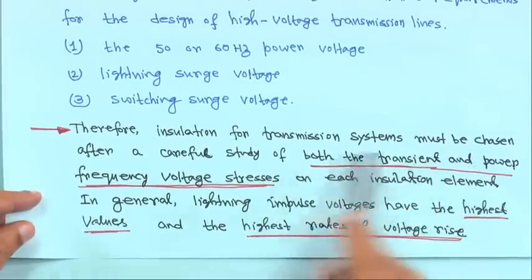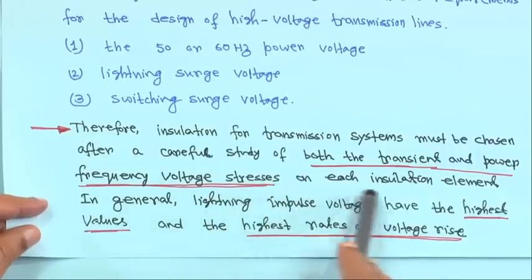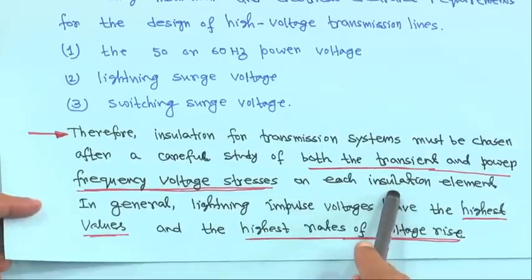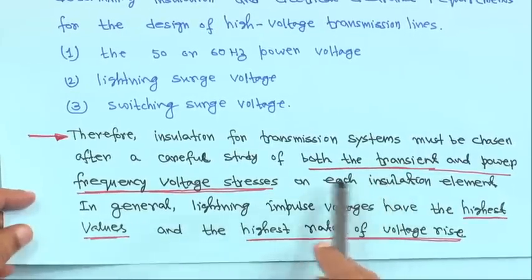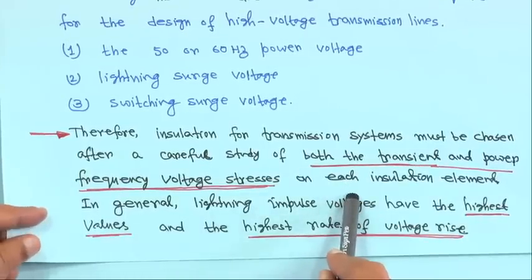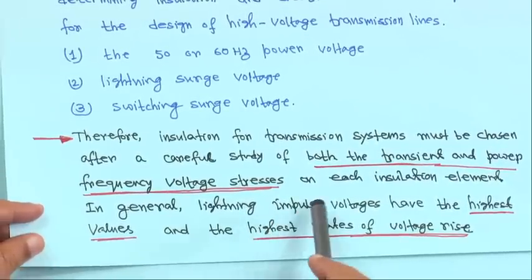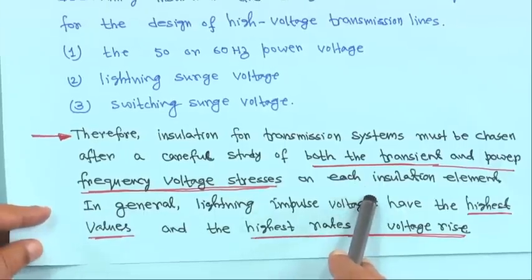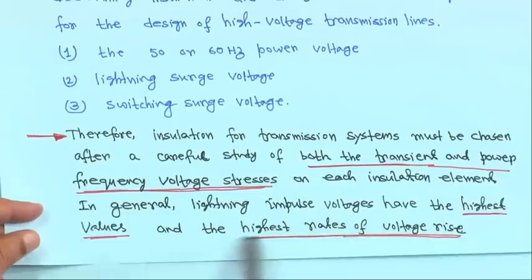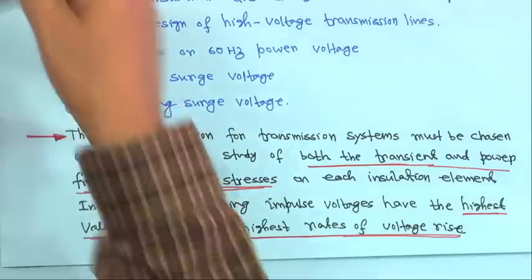Insulation for transmission systems must be chosen after a careful study of both the transient and power frequency voltage stresses on each insulation element. In general, lightning impulse voltages have the highest values and the highest rate of voltage rise, making the lightning stroke the most severe concern among all types.